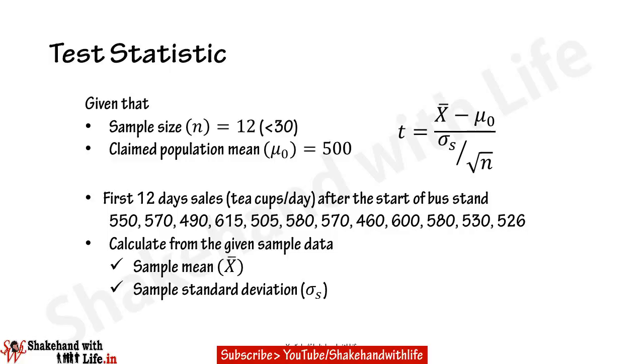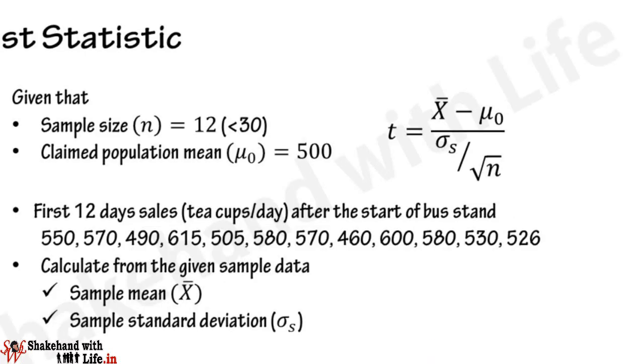In this problem, the population standard deviation is not given and the sample size is small, that is less than 30. Therefore, we use the T-statistic, given by: t equals x-bar minus mu-naught in the numerator, and sigma-s divided by the square root of n in the denominator.